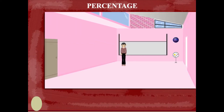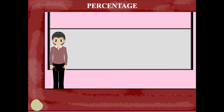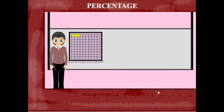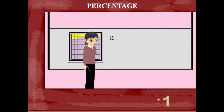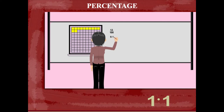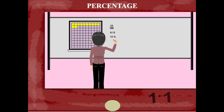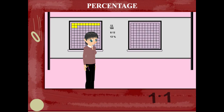Teacher Nancy has a hundred square grid on the board. She colors 12 squares and writes the fraction 12 upon 100. This is the same as 0.12, and 12 out of 100 is also 12%.